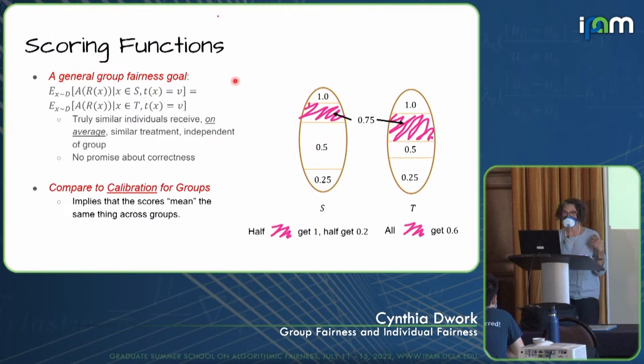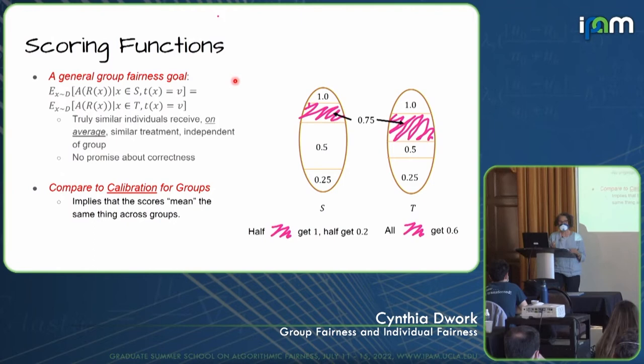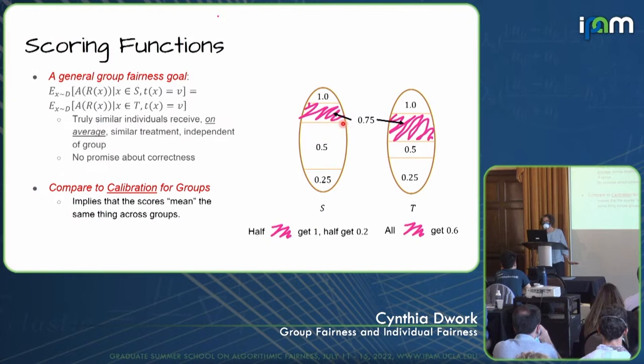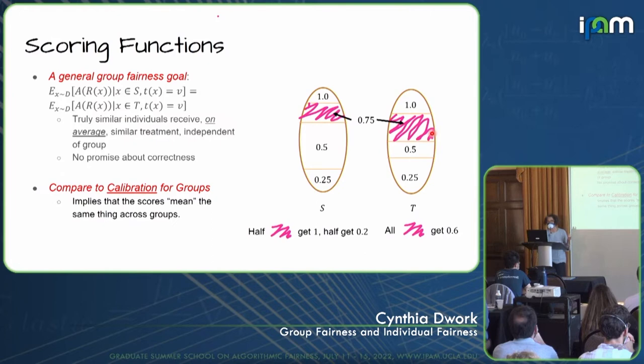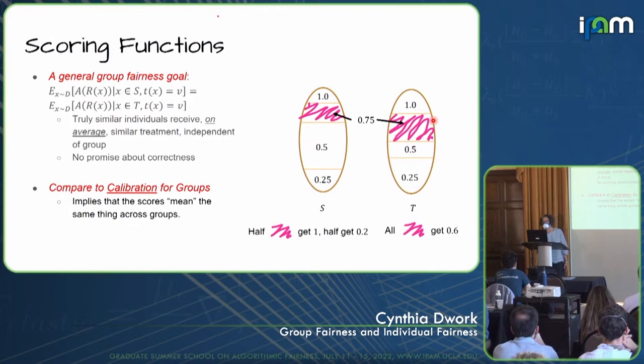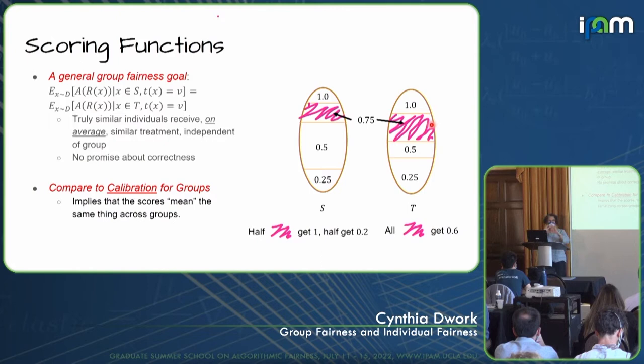Notice that this guarantee says absolutely nothing about correctness. For example, here are S and T. These people have a truth of 0.75, as do these people over here. Among the people in pink in S, half of them will get 1 and half of them get 0.2. In T, all of the people with truth 0.75 get 0.6. On average, the treatment is the same in the two groups — not constrained by actual correctness at all.